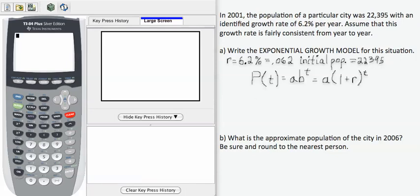The formula we have used in the past to write models for population growth is P(t) equals AB to the t. That's our exponential growth or decay model. In this case, we don't know B. So I'm going to rewrite the form of this equation to factor in the information I do know, which is R. I can determine B by adding the value of our growth rate in decimal form to the number 1.